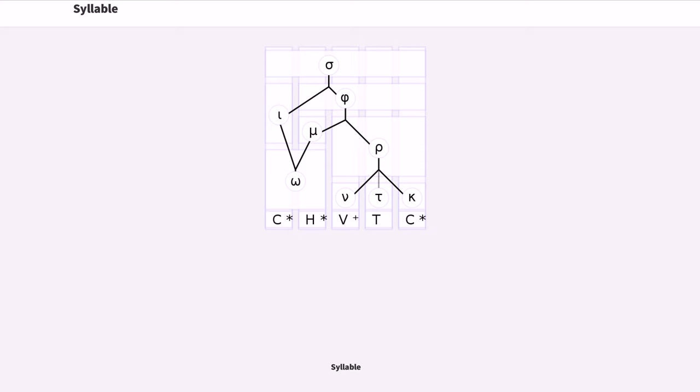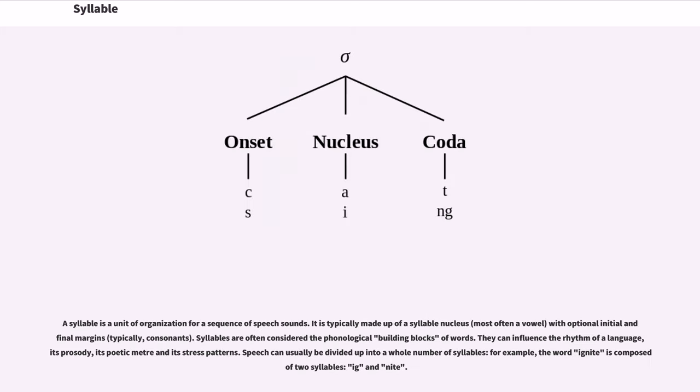A syllable is a unit of organization for a sequence of speech sounds. It is typically made up of a syllable nucleus with optional initial and final margins. Syllables are often considered the phonological building blocks of words. They can influence the rhythm of a language, its prosody, its poetic meter, and its stress patterns.